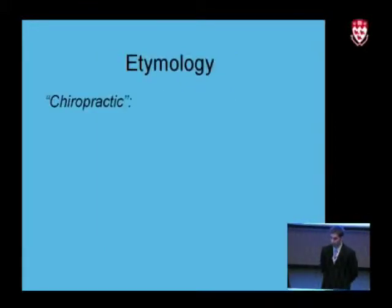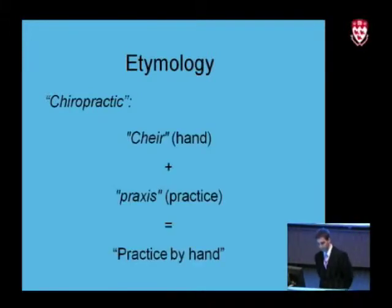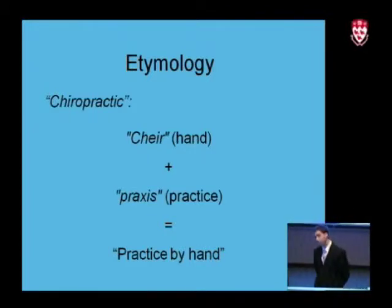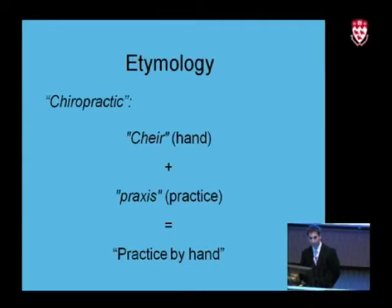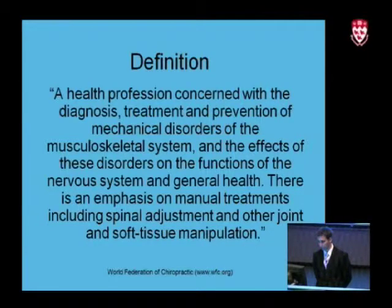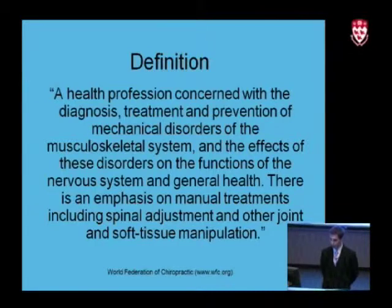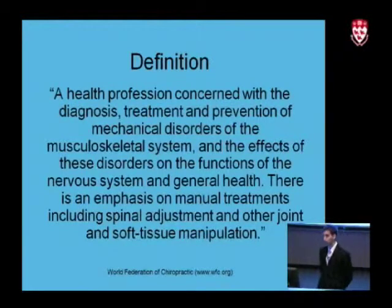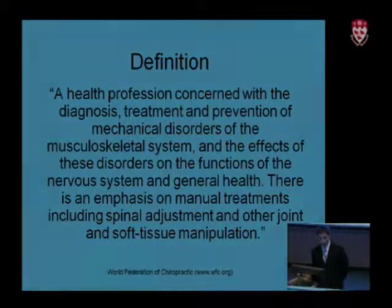A good place to start is the definition. If we look at the etymology of the word chiropractic, it's actually from two Greek words — 'kir' and 'praxis' — which basically translates to 'practice by hand.' This is not only a diagnostic tool, but also a therapeutic tool used by the chiropractor. The hands are really central to the profession. The official definition: it's a health profession concerned with the diagnosis, treatment, and prevention of mechanical disorders of the musculoskeletal system and the effects of these disorders on the functions of the nervous system and general health. There is an emphasis on manual treatments, including spinal adjustment and other joint and soft tissue manipulation. The idea of mechanical disorders and the neuromusculoskeletal system is central to chiropractic.